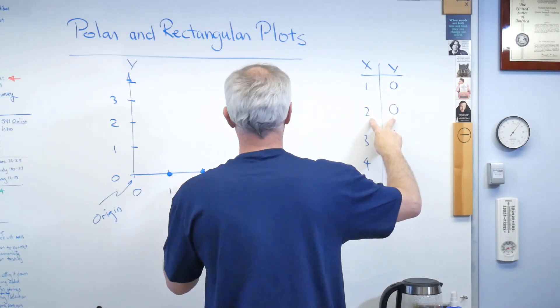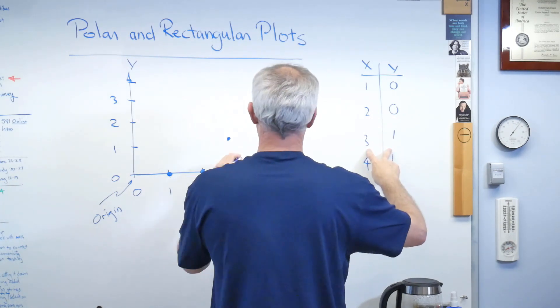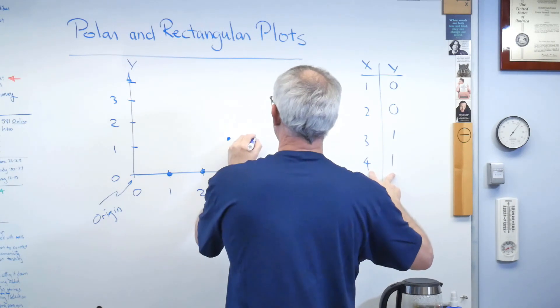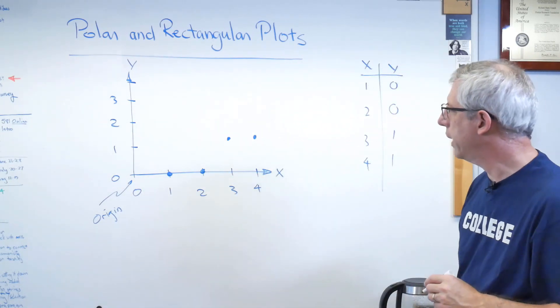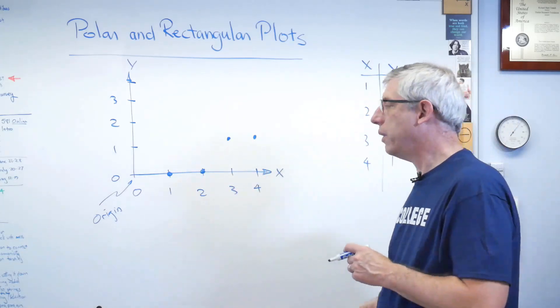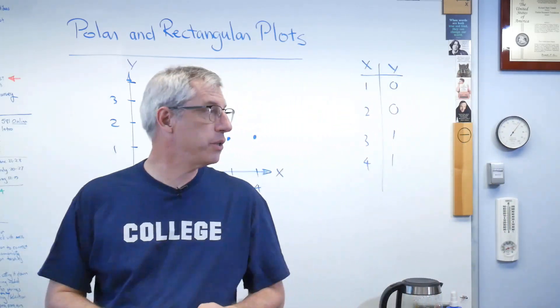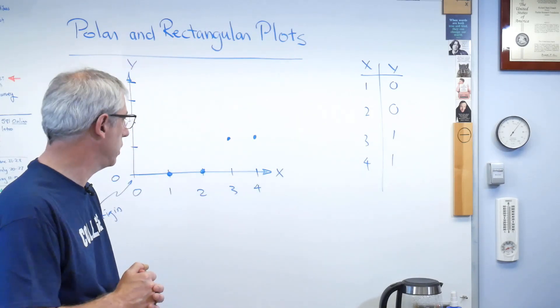So let's get the first point, x equals one, y equals zero, right there. x equals two, y equals zero, right there. x equals three, y equals one. I'll get my head out of your way here in a second. There we go. There's what it looks like now. Okay, this is more helpful a lot of times than this is. We're not very good at looking at lists of numbers. We're much better at looking at pictures.